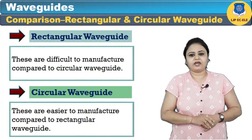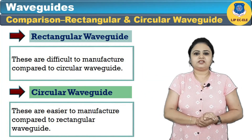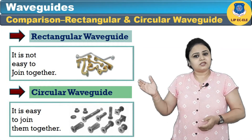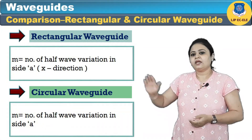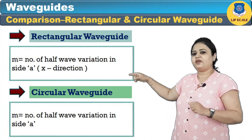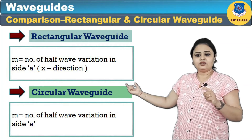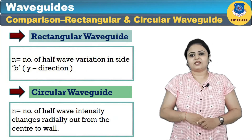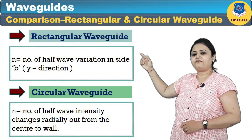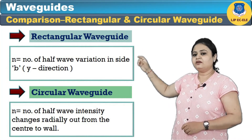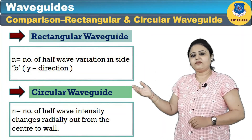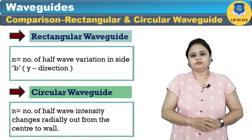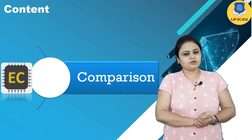Rectangular waveguides are more difficult to manufacture compared to circular waveguides, and circular waveguides are easier to join together than rectangular waveguides. In the rectangular waveguide, m indicates the number of half-wave variations in the x direction (side a), and n indicates the number of half-wave variations in the y direction (side b). In the circular waveguide, m indicates half-wave variation inside radius a, and n indicates the number of half-wave intensity changes radially outward from the center to the wall.